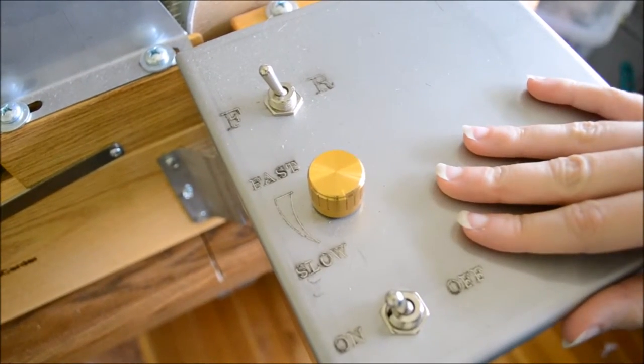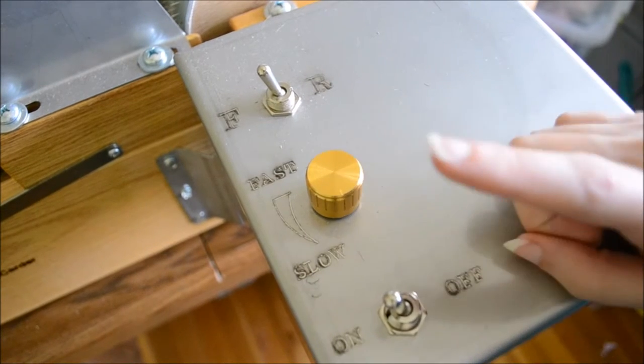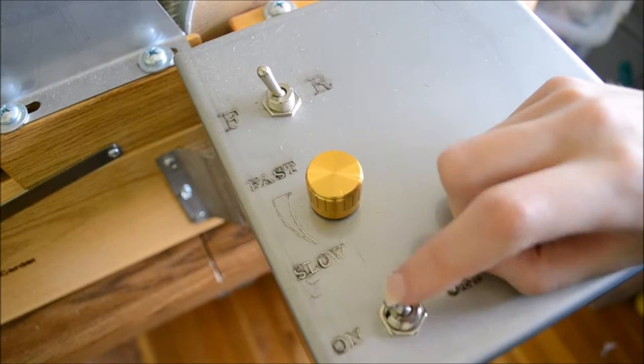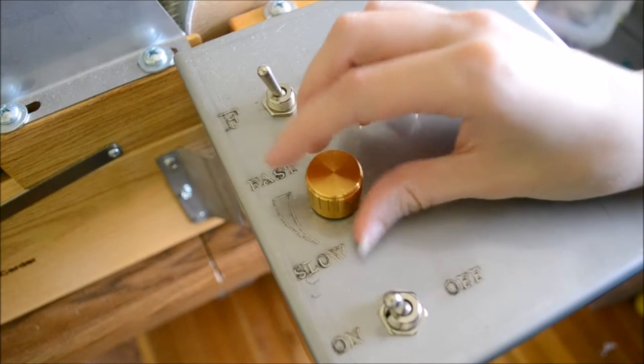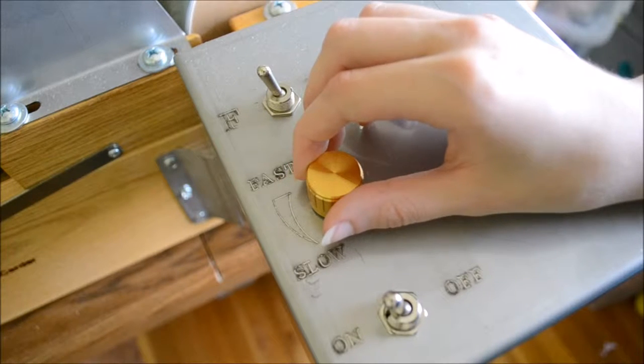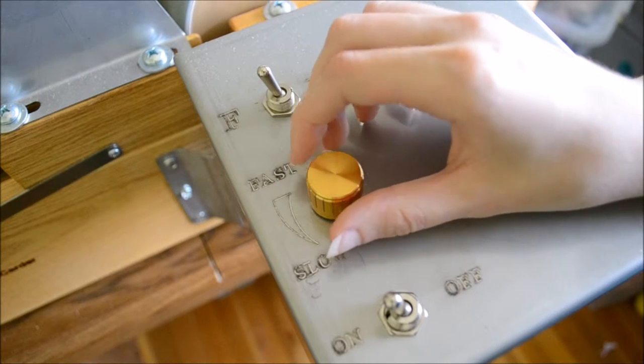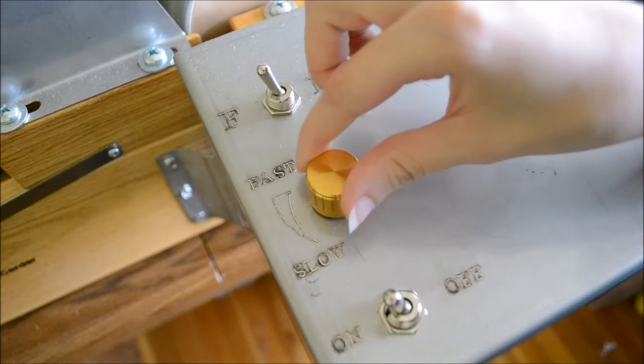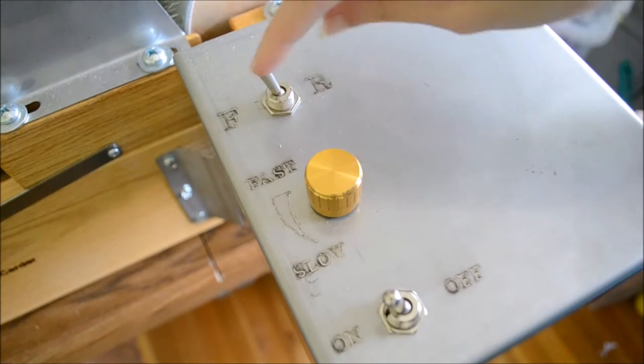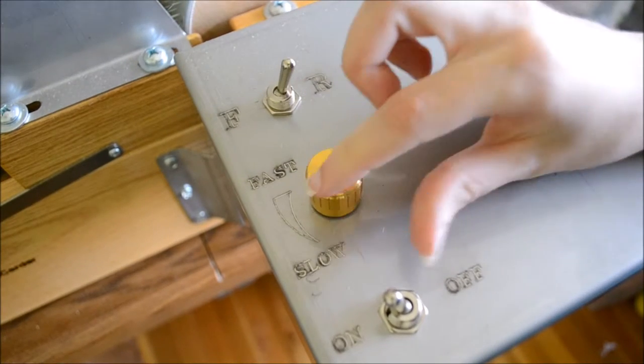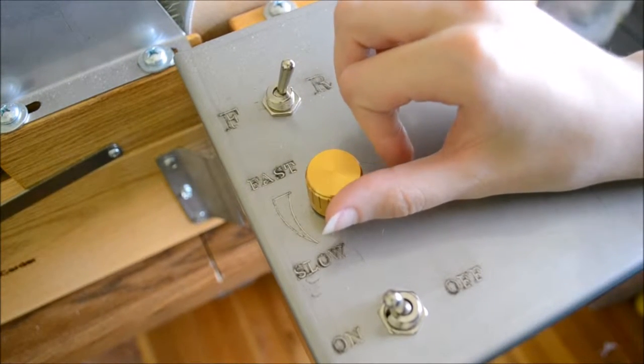Now, before we get started, I want to talk to you about these controls. When you start, you flick it to on and then advance the speed like this. If you want to go into reverse, completely turn the speed down and flip it to reverse, and then turn the speed up again.